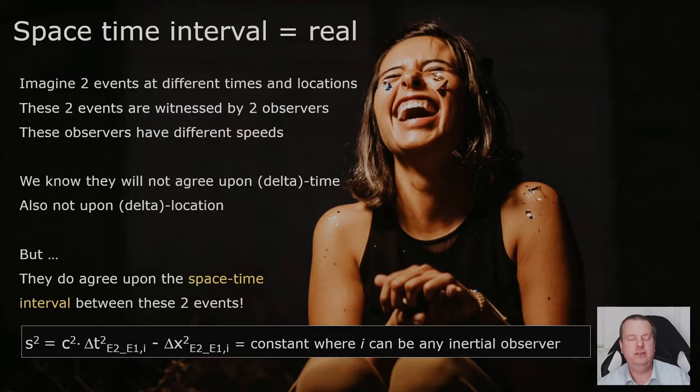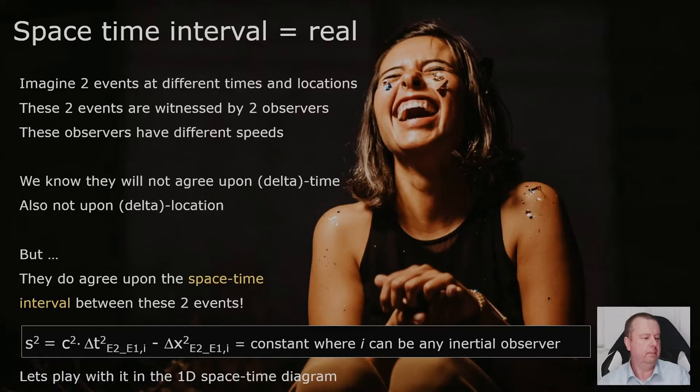So you could say it's a bit like Pythagoras. It's the difference in time squared minus the difference in location squared. And of course, you need to have the speed of light somewhere in there because this is special relativity. And when different observers apply this equation to the same two events, they always will get the same answer. It doesn't depend on where or how fast each observer is going. And that's what makes it a universal truth.